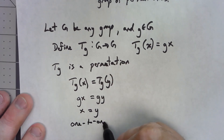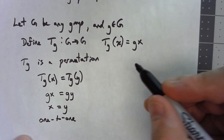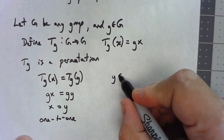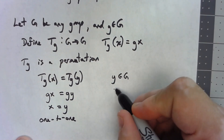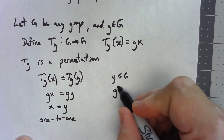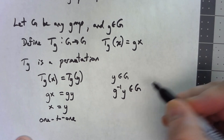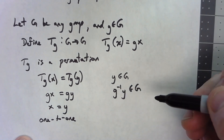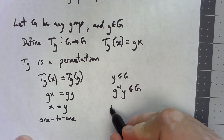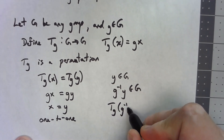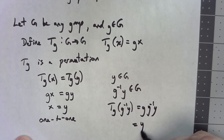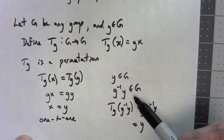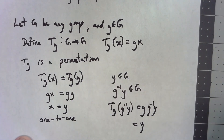Is it onto? Let's say y is an element of the codomain G. Now, g⁻¹y is also an element of G because G is closed under inverses and the group operation. Then t_g of g⁻¹y equals g times g⁻¹y, which of course equals y. So for any y in G, we found an element of G that t_g maps to it — therefore it's onto. So for any g in the group, t_g is a permutation.